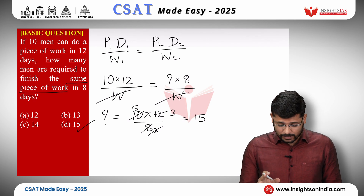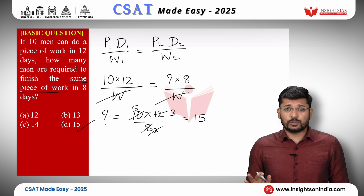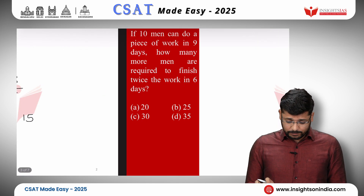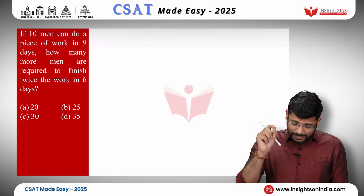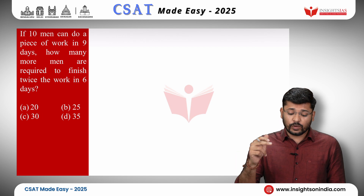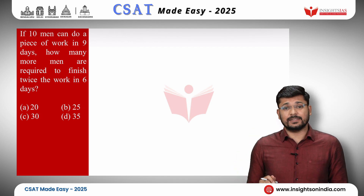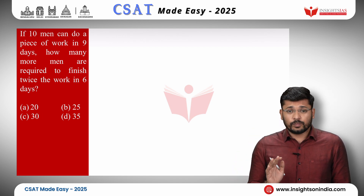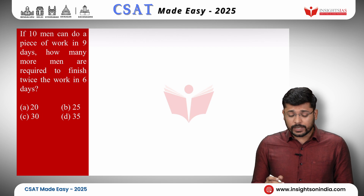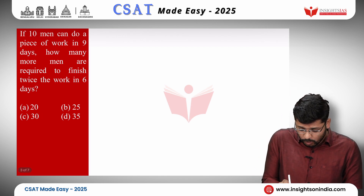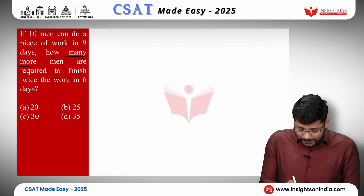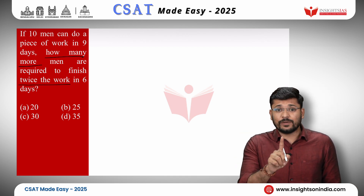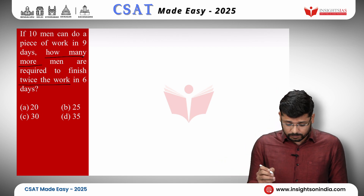Simple question — we understood the formula through this question. Now we will look at the second question. If 10 men can do a piece of work in 9 days, how many more men are required to finish twice the work in 6 days? In this question, there are two key things to observe. One is 'how many more' — it is not how many men, it is how many more men. And the other key thing is 'twice the work' — it is not the same work, it is twice the work.